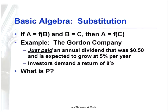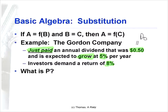So we can substitute in and say the price today is equal to a function of this period's dividend plus growth. For example, the Gordon company may have just paid — meaning this is D0 — a dividend of 50 cents, expected to grow at 5%, with investors demanding a return of 8%. This would be dividend today, not the dividend in the future. What we're after is P, the price.